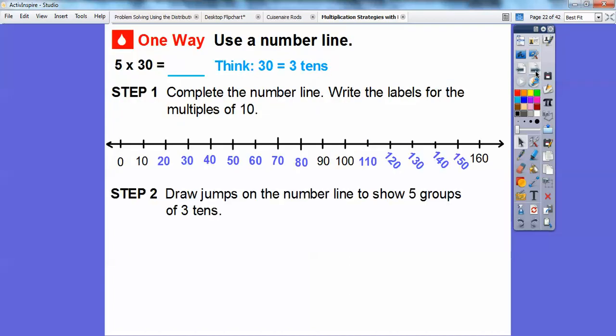And then step 2, draw jumps on the number line to show 5 groups of 3 tens. So here's one jump of 3 tens right there. It takes us to 30. So there's 3 tens. There's 1 ten, there's 2 tens, there's 3 tens right there. Notice the number line's going by tens right here. So when I do 3 of them, it's going to jump 30.